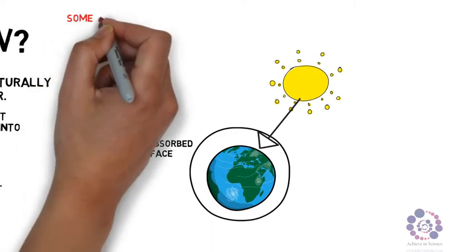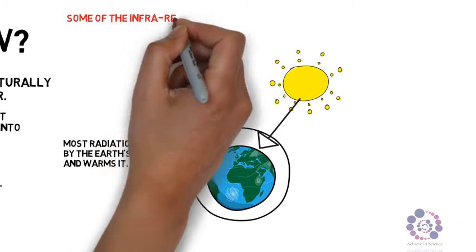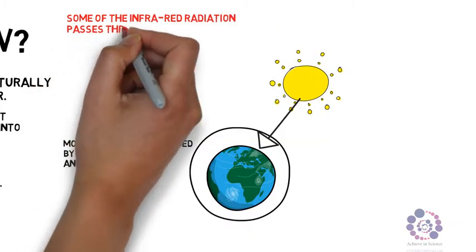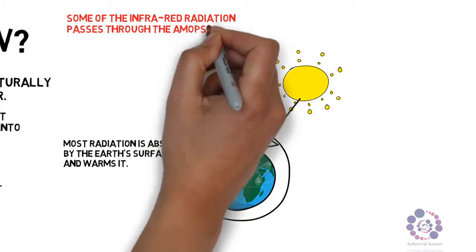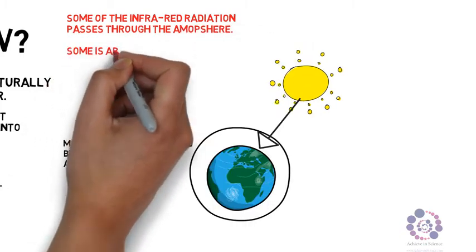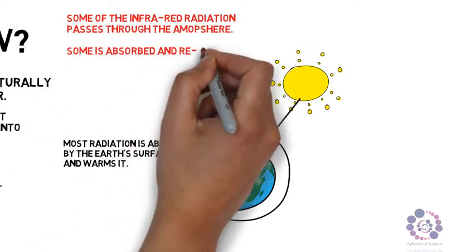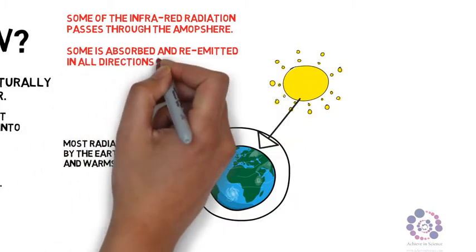Some of the infrared radiation passes through the atmosphere. Some is absorbed and re-emitted in all directions by greenhouse gases. This warms the earth's surface and the lower part of the atmosphere.